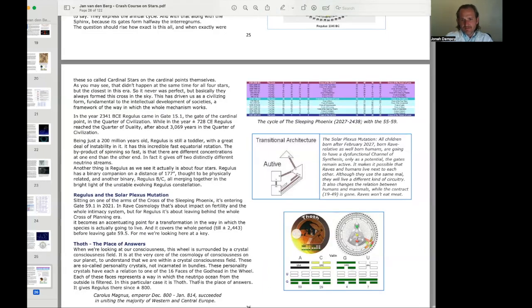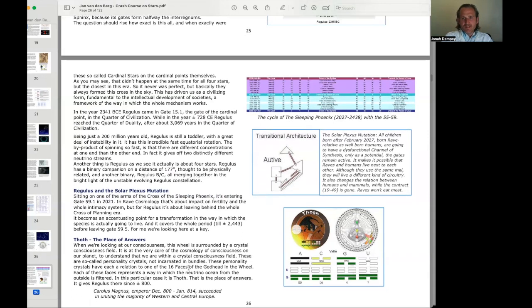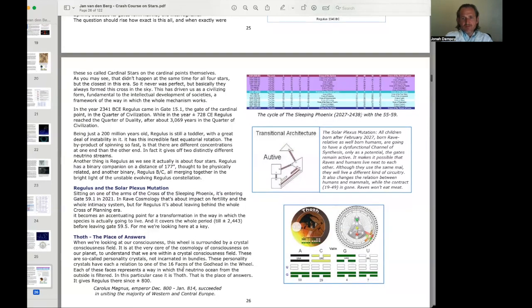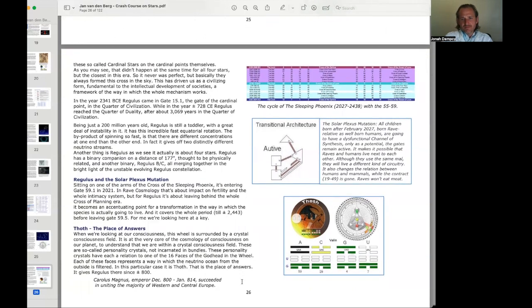When we're looking at our consciousness, this wheel is surrounded by a crystal consciousness field. It's at the very core of the cosmology of consciousness in our planet to understand that we are within a crystal consciousness field. These are so-called personality crystals, not incarnated in bundles. These personality crystals have each a relation to one of the 16 faces of the Godhead in the wheel. In this particular case is Thoth. That is the place of answers.